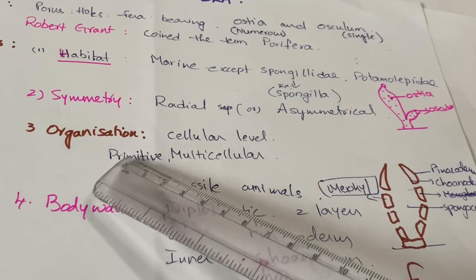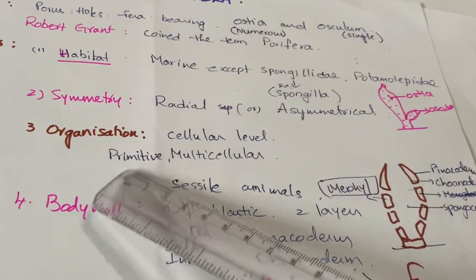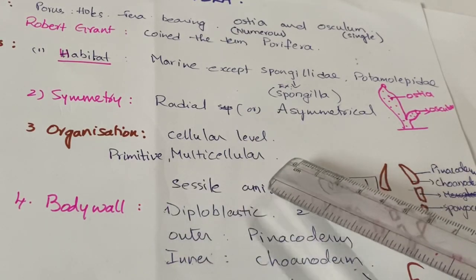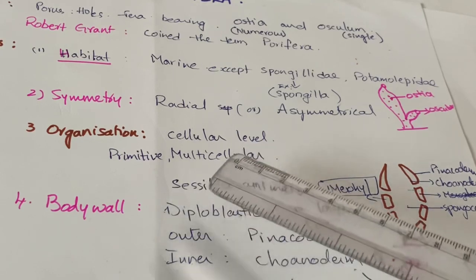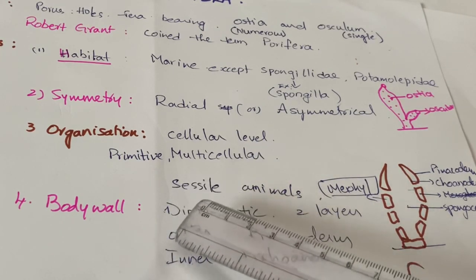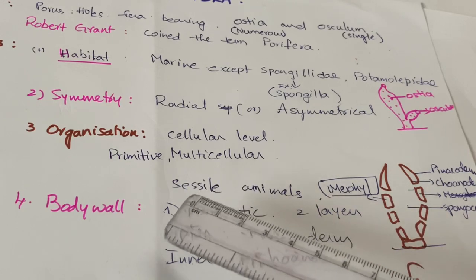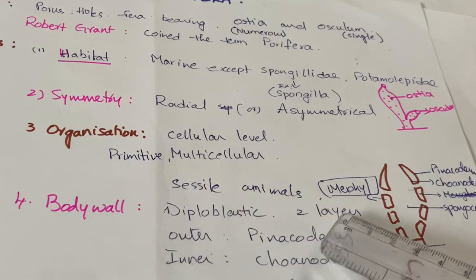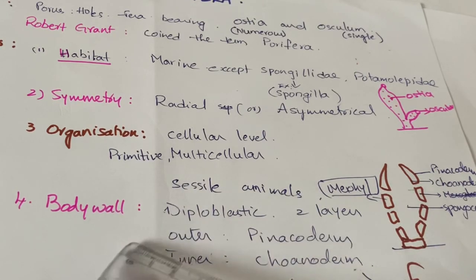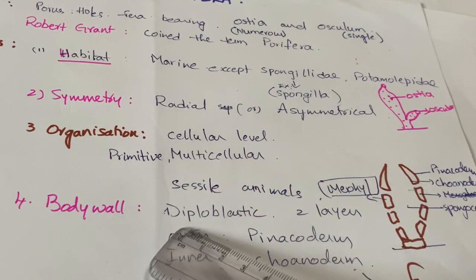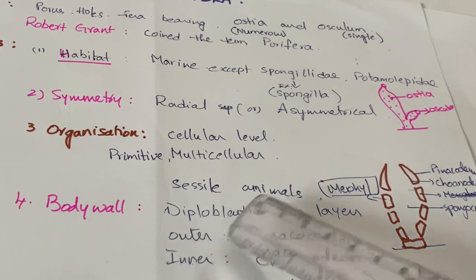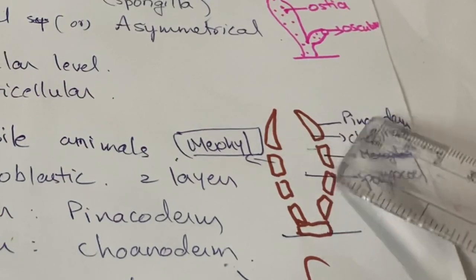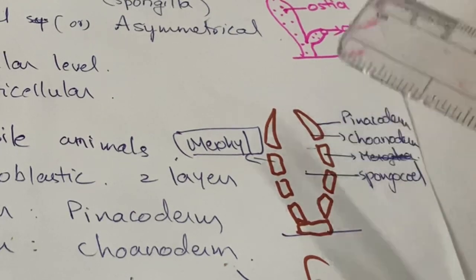Next, organization. Porifera show cellular level of organization and are primitive multicellular animals. These are sessile, meaning they stick to some substratum and live a sedentary type of life without any movement. The body wall is diploblastic — 'diplo' means two — so the body wall consists of two layers: the outer pinacoderm and the inner choanoderm.